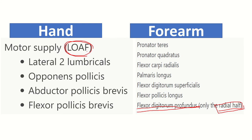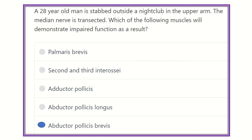So in the hand and in the forearm, the median nerve supplies this group of muscles. Our final answer is abductor pollicis brevis, which is supplied by the median nerve.